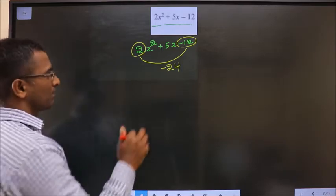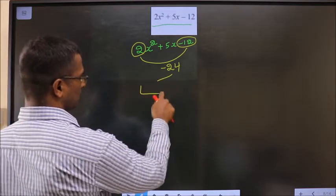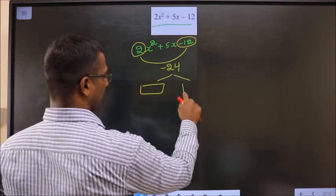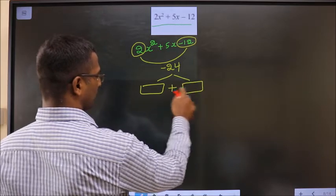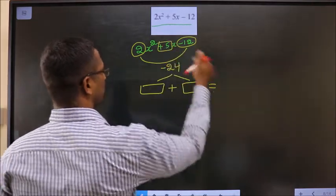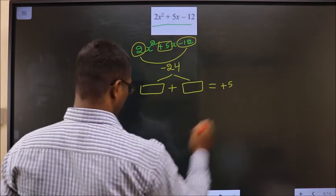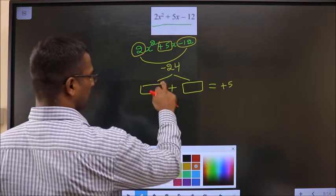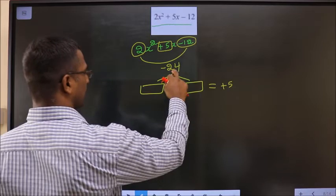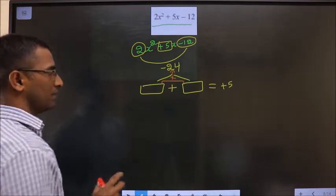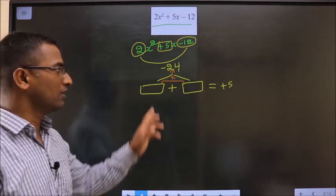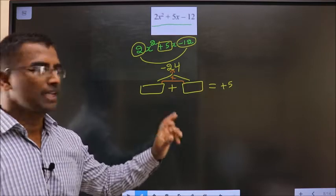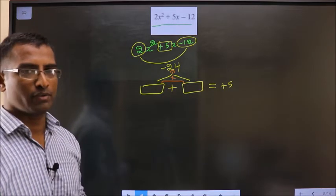Now, look for two numbers such that when you add them, you should get this middle one, plus 5. And when you multiply these two numbers, you should get minus 24. Clear with the condition? When you add, you should get plus 5. When you multiply, you should get minus 24.